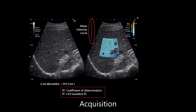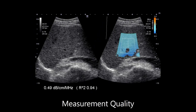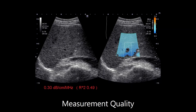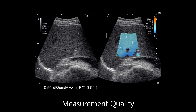An R-squared value of greater than 0.9, as seen here, indicates an excellent fit to the expected model. Measurement ROI placement can be guided to regions of high quality by observing the font color of the attenuation coefficient. A red font color indicates an area where measurements should be avoided. A yellow font color indicates an area where measurements may be unreliable. Reliable measurements can be made when the attenuation coefficient is displayed in white, indicating an R-squared value of greater than 0.9.